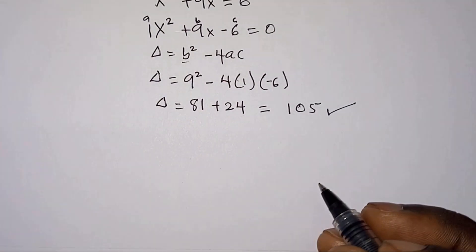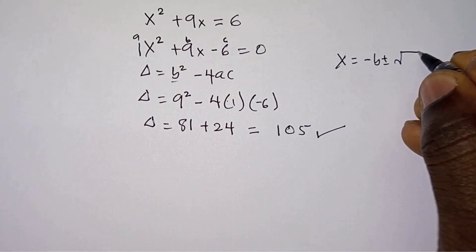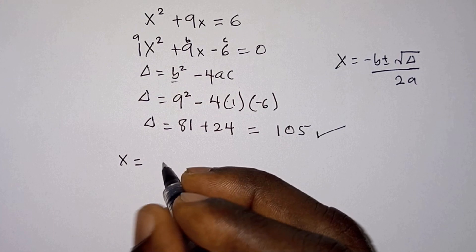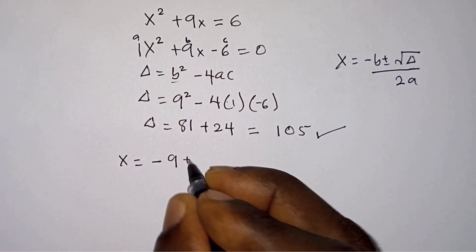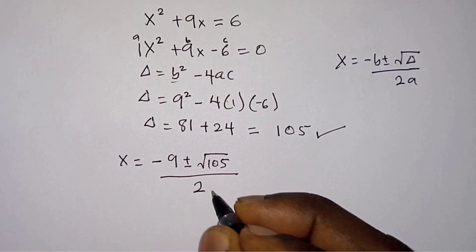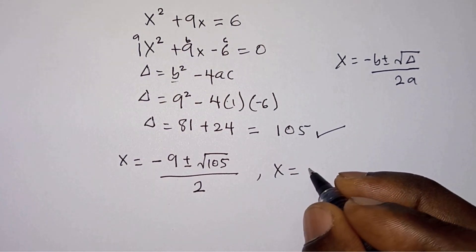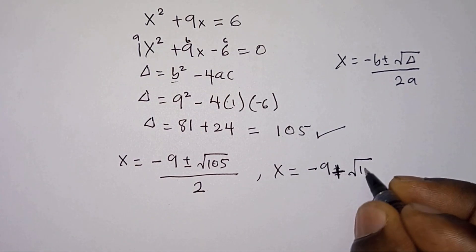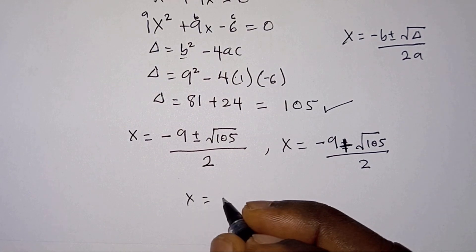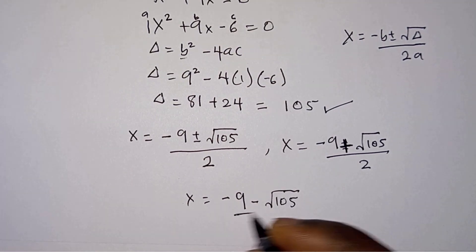Using the quadratic formula, x equals negative b plus or minus square root of delta divided by 2a. So x equals negative 9 plus or minus square root of 105, divided by 2. This gives two solutions: x equals negative 9 plus square root of 105 over 2, or x equals negative 9 minus square root of 105 over 2.